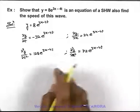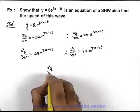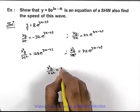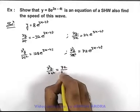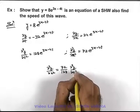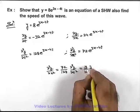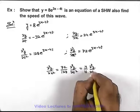Now combining these relations, we get ∂²y/∂x² = 72/128 × ∂²y/∂t², which is equal to 9/16 × ∂²y/∂t².